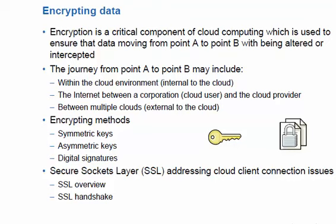We can achieve encryption by implementing an algorithm to scramble or encrypt data, and then use a key for the receiving person to unscramble or decrypt that information. Unencrypted data is called plain text and encrypted data is referred to as cipher text. The two main kinds of encryption are symmetric encryption and asymmetric encryption.